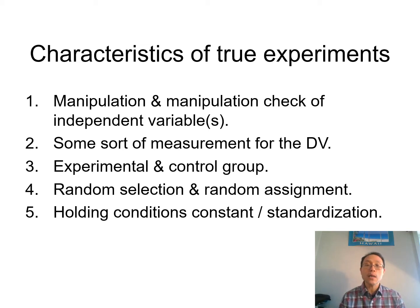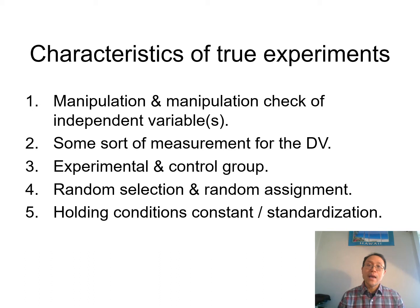So what is random selection? Random selection means every person in your population of interest needs to have an equal chance of being recruited into your study. And random assignment means that once you gather this pool of people, you cannot assign them to the control group or experimental group based on your preference — you have to assign them based on randomness. Participant A and participant B have an equal chance of being assigned into either group, usually done by flipping a coin or throwing a dice.